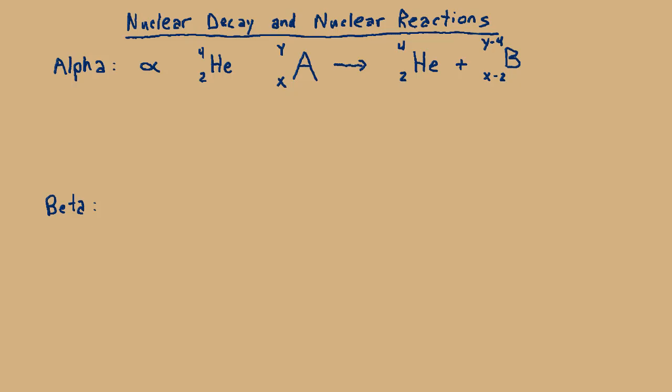On the right-hand side, we have a 2 and an X minus 2. If you add those together, you get X, which balances. Up top we have four total nucleons in the helium and Y minus four in our other product. And they add together to make Y. So this is the balancing.